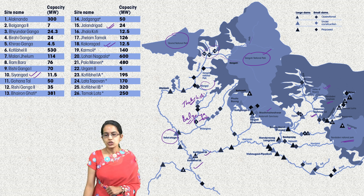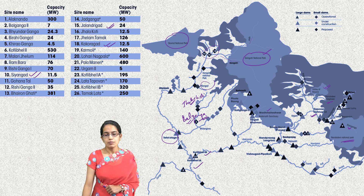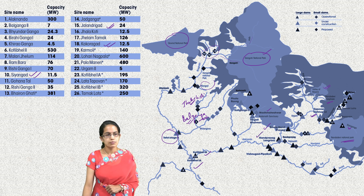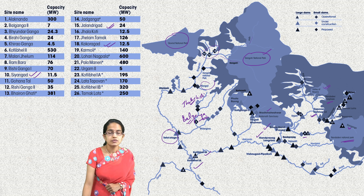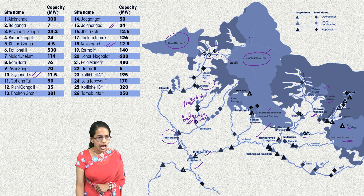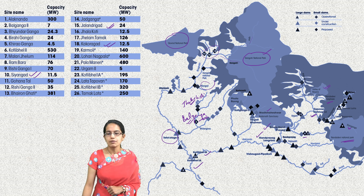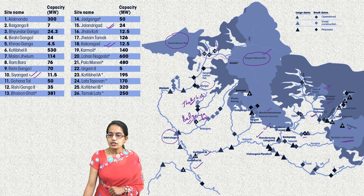Similar to the Tapovan Vishnugat project, there are numerous projects on the Alaknanda river — Bola Nandaprayag, Nandaprayag, and Langarasu are some of the major ones. On the same tributary of Alaknanda, we also have the Bihari Ganga project and Gohan Tal. Gohan Tal and Bihari Ganga are part of the tributary of Alaknanda.